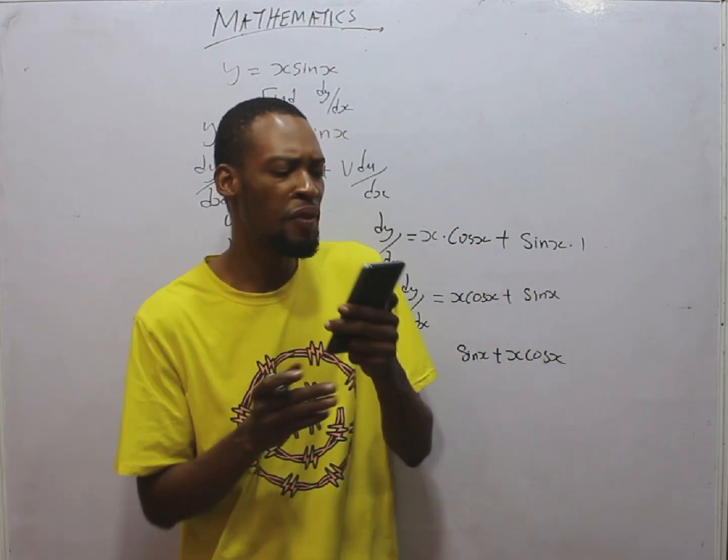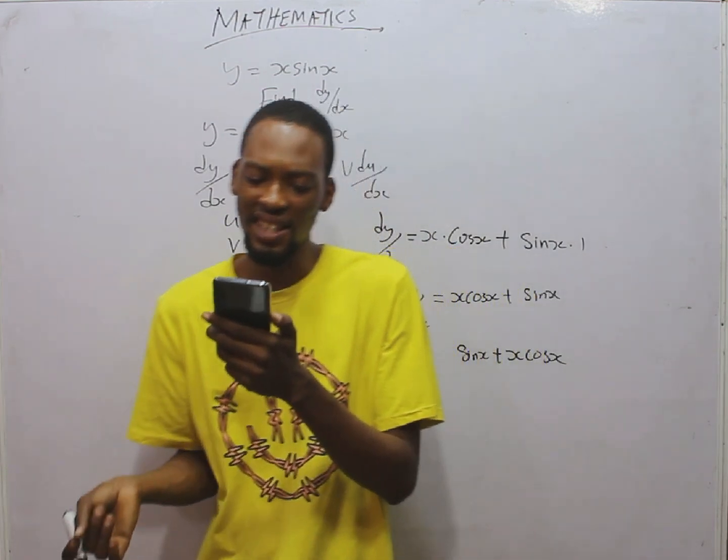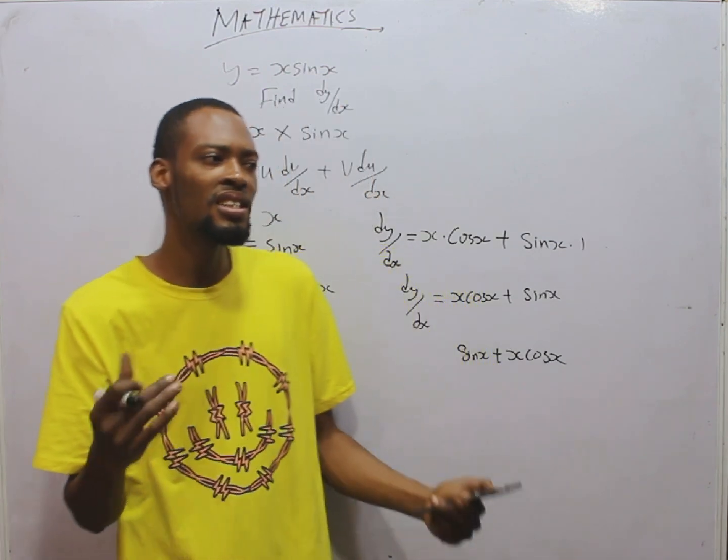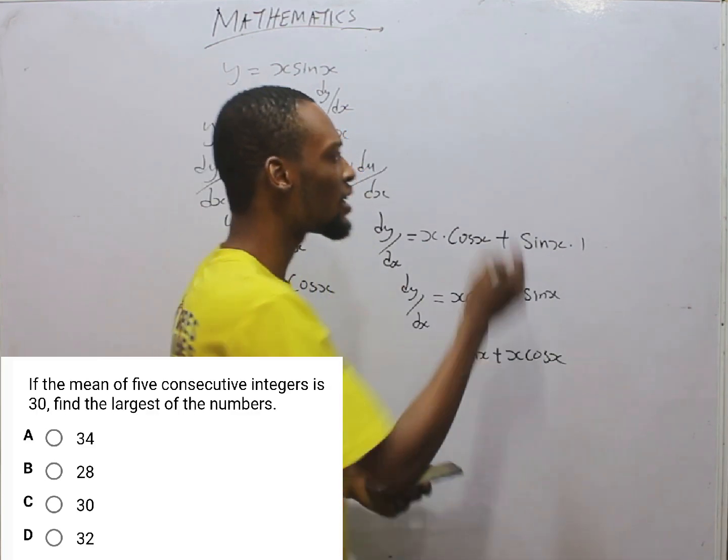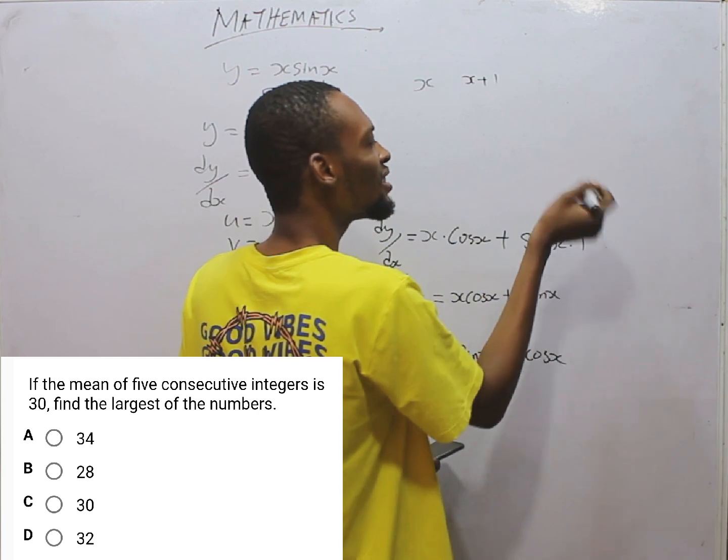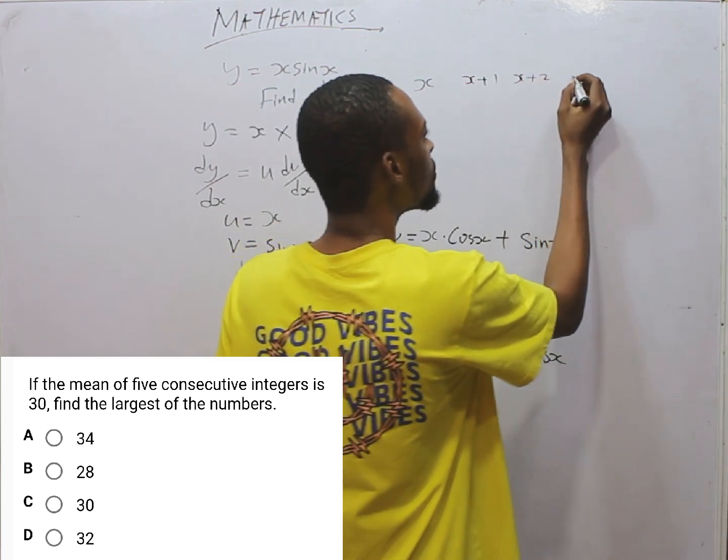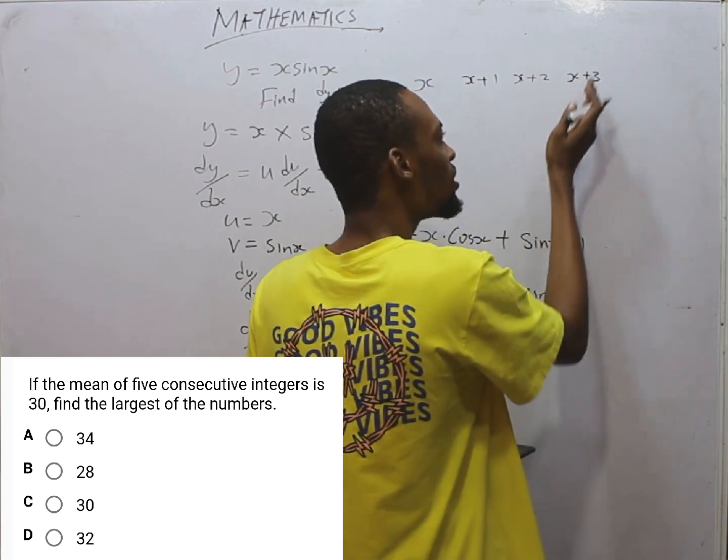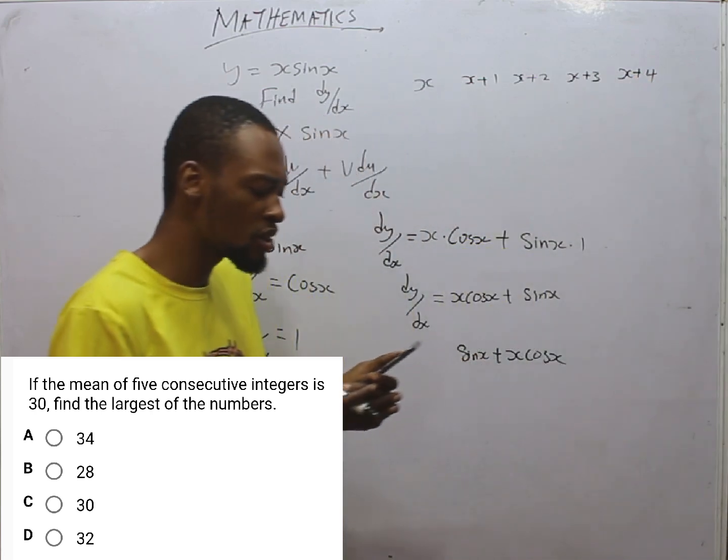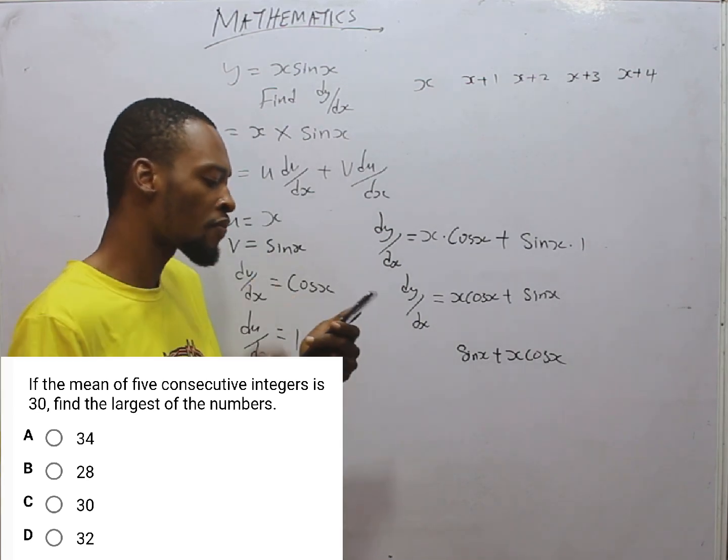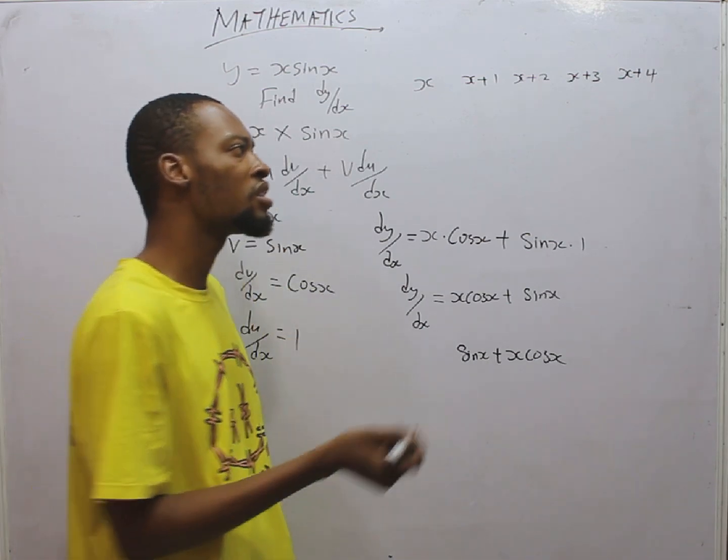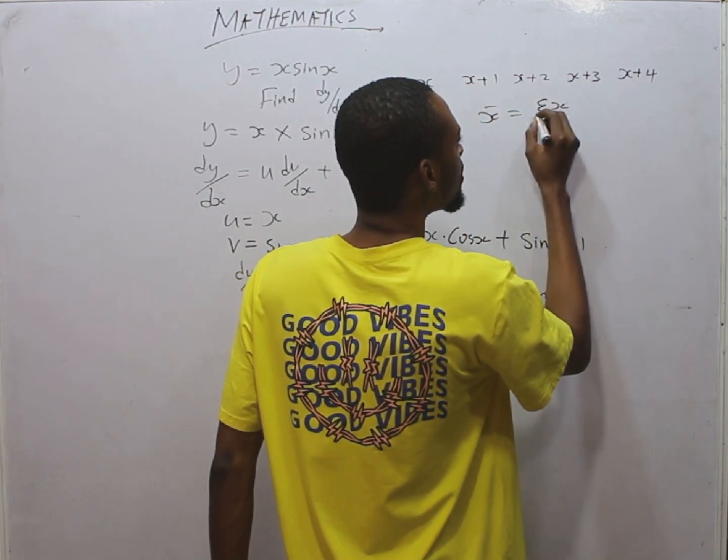The next question says, if the mean of 5 consecutive integers is 30, find the largest of the numbers. Talking about consecutive integers, it simply means integers or values increasing by 1. Let's call the first one S. If the first one is S, the next one will be S plus 1. The next one will be S plus 2. The next one will be S plus 2 plus 1, so S plus 3. The next one will be S plus 3 plus 1, that is S plus 4. So 1, 2, 3, 4, 5, we have 5 consecutive integers, integers increasing by 1. The difference between them is 1.